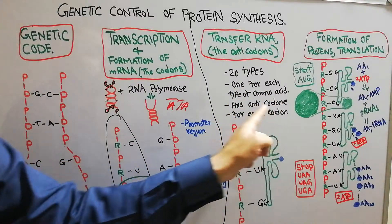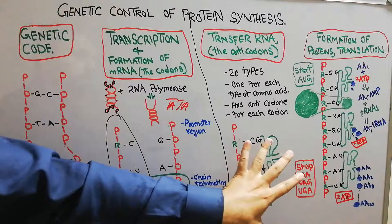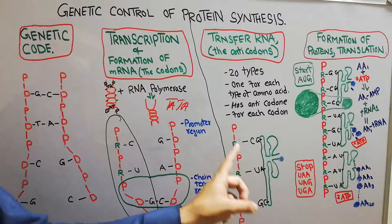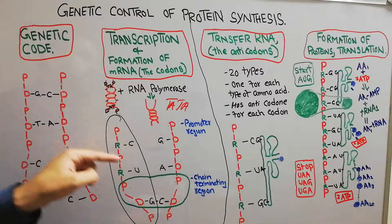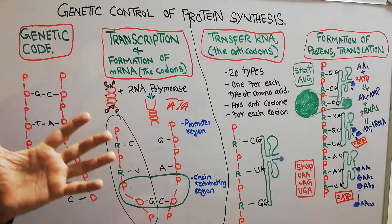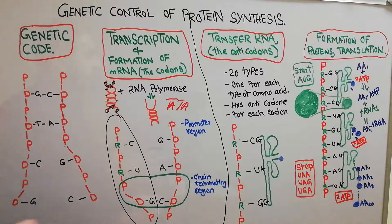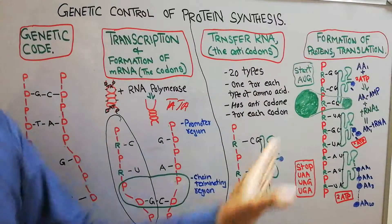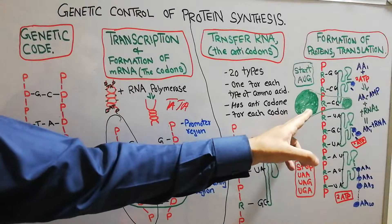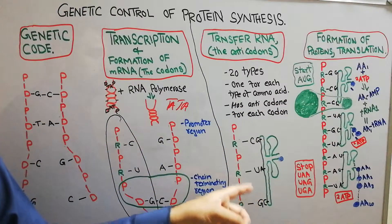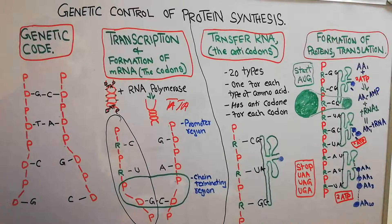There are 20 types of transfer RNA, one for each type of amino acid, and each has an anticodon for each type of codon. Codons are present on the messenger RNA, which is coming out of the nucleus into the cytoplasm. However, transfer RNA cannot bind itself to the messenger RNA alone — it needs the help of ribosomal RNA. Only when the messenger RNA is attached to the ribosome can the transfer RNA come, bring an amino acid, and help in the formation of protein.